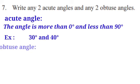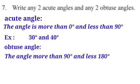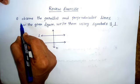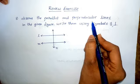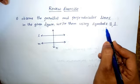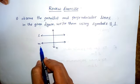Obtuse angle is an angle more than 90 degrees. Examples are 100 degrees and 120 degrees. Problem eight: observe the parallel and perpendicular lines in the given figure and write them using symbols. In this figure there are three lines: L, M and N.